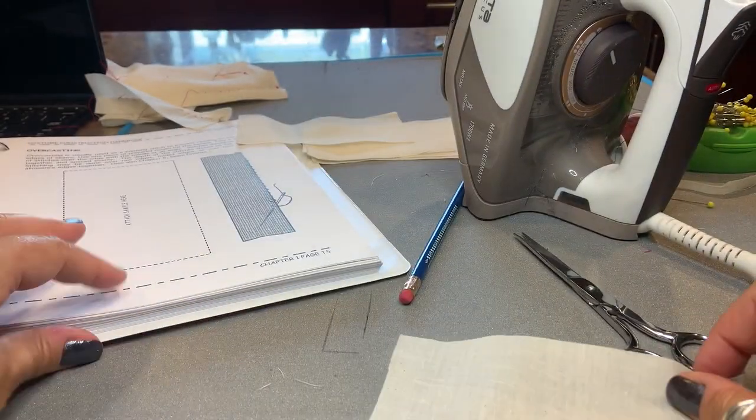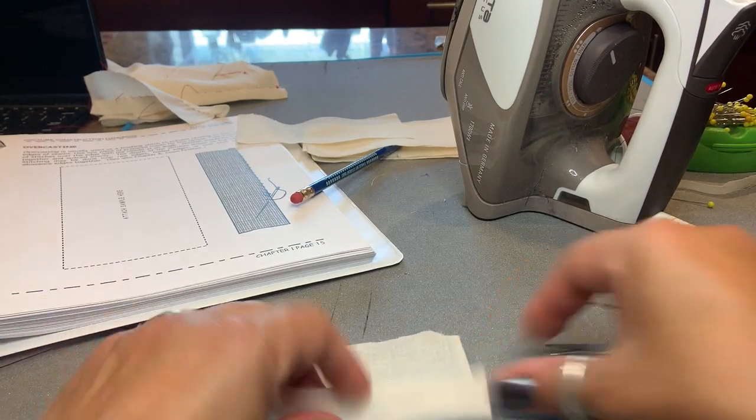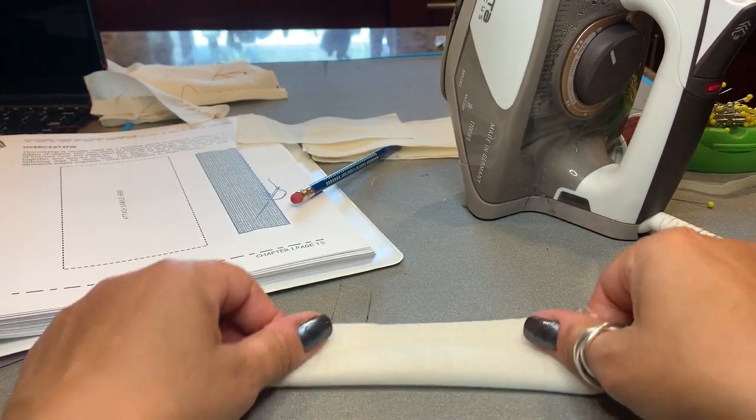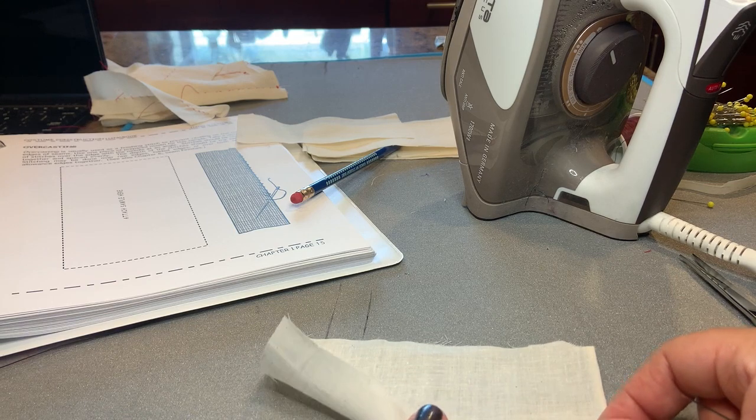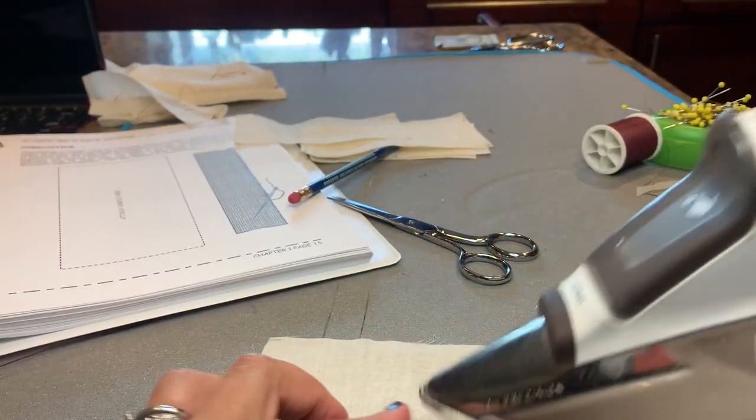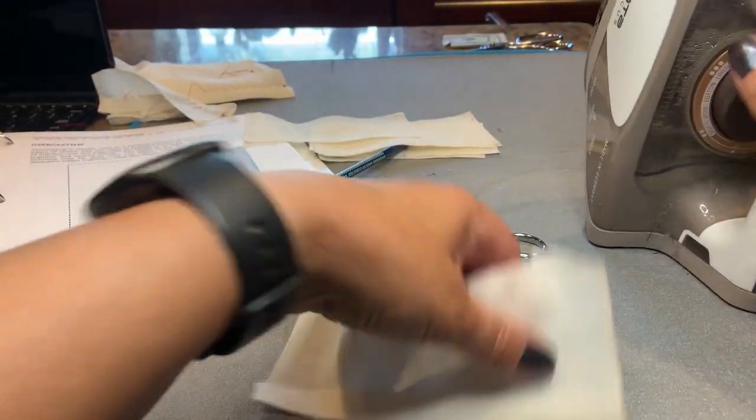All right, so this next stitch is an overcast stitch. Do you remember we were talking about different ways to finish the edge of raw fabric? This is a very simple and effective method, and you see it a lot in older garments.